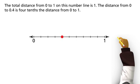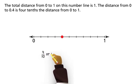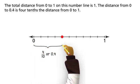The total distance from 0 to 1 on this number line is 1. The distance from 0 to 4 tenths is 4 tenths the distance from 0 to 1.